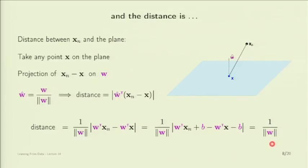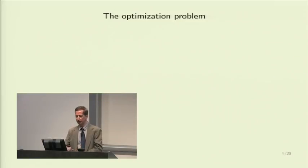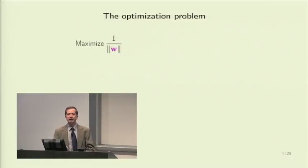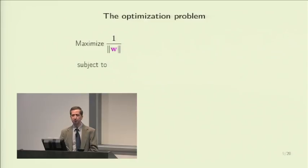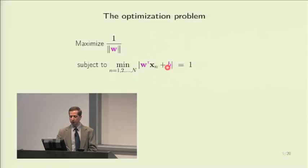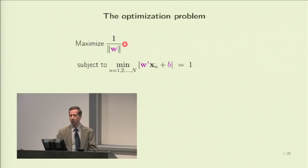Here is the optimization problem that resulted. We are maximizing the margin — which happens to be 1 over the norm — subject to the fact that for the nearest point, which has the smallest value, we scaled W so that this quantity equals one for the minimum over all training points. This gives a constrained optimization: maximize 1 over ||W|| subject to min_n of |y_n(W transpose X_N + B)| equals one. This is not a friendly optimization problem because a minimum in the constraints is bad news.